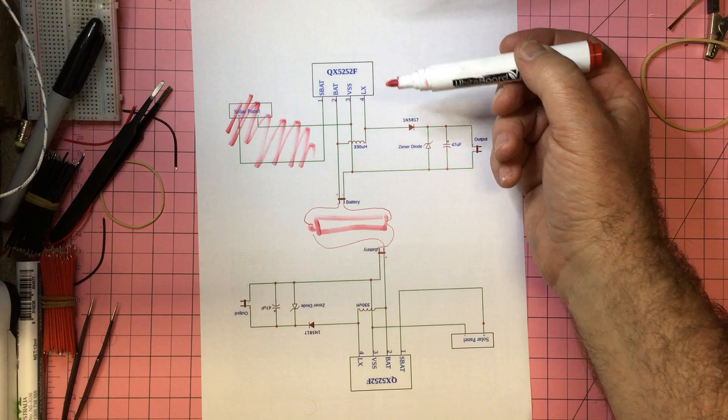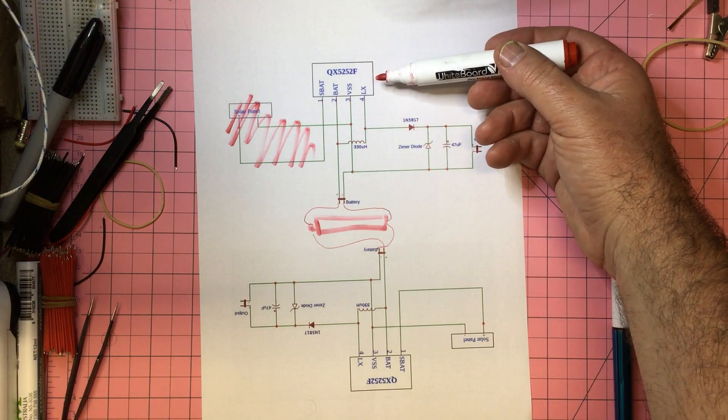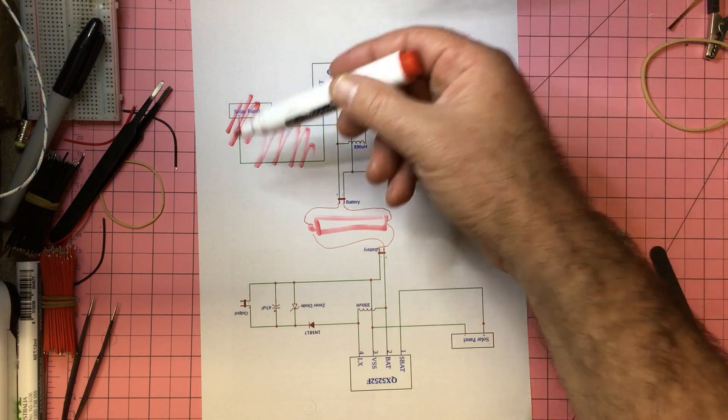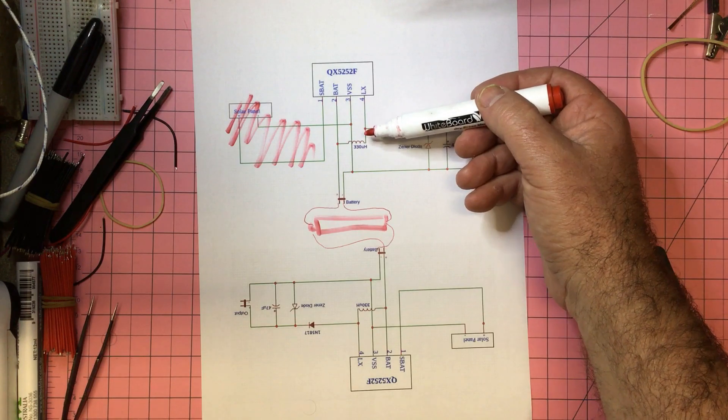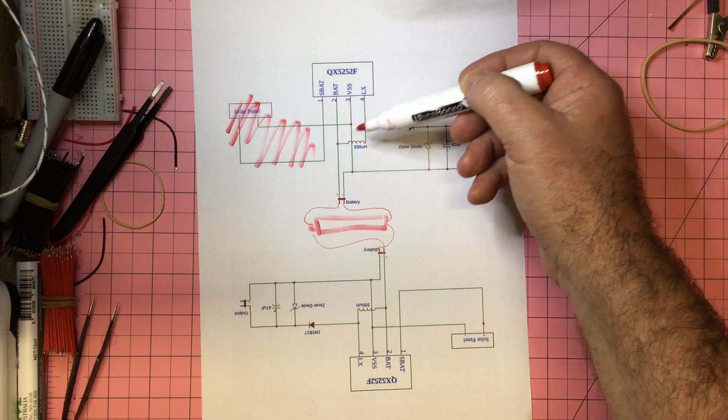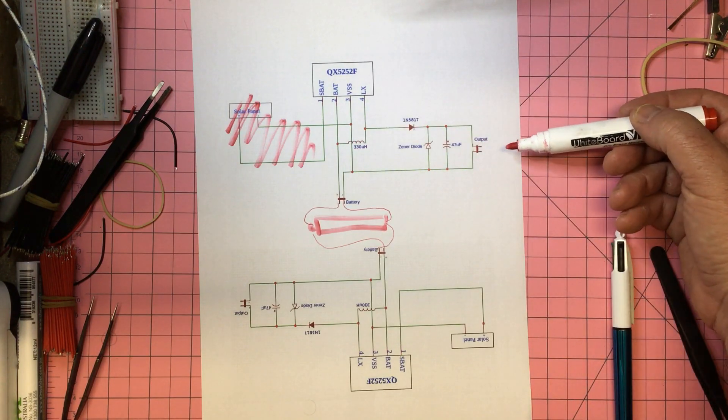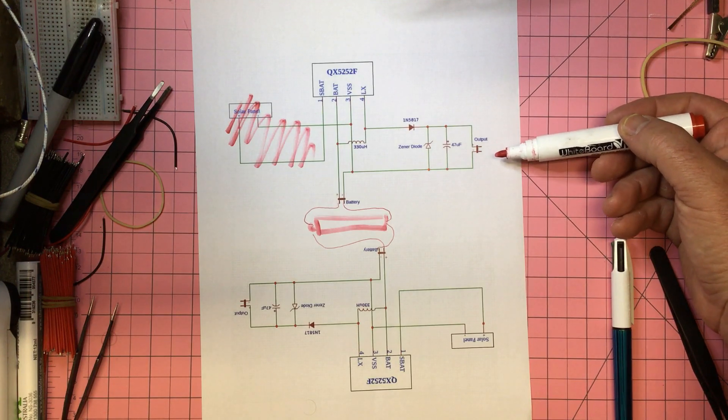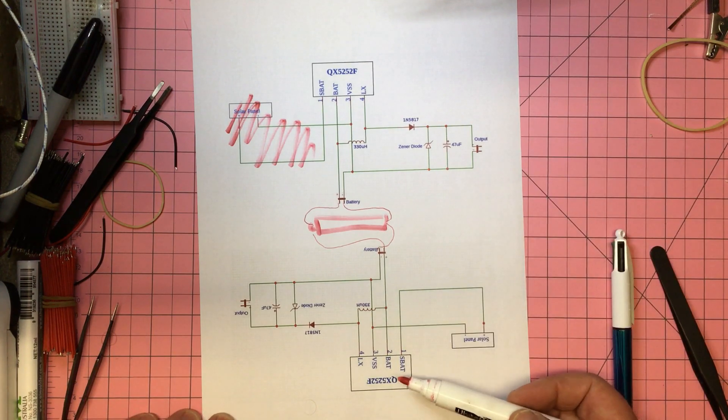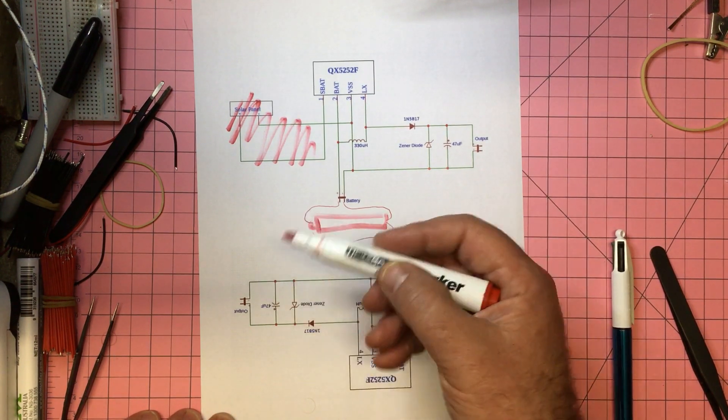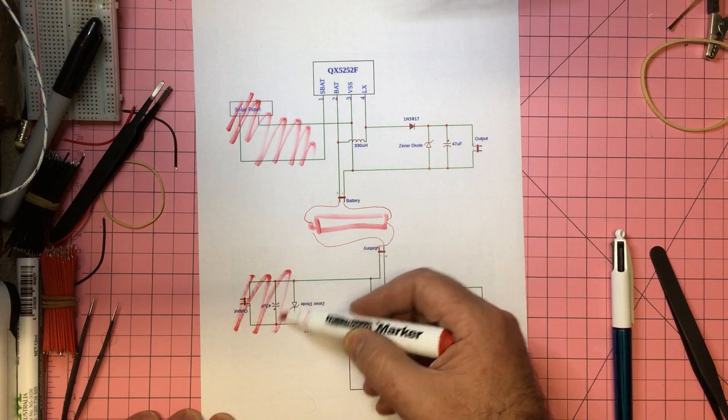That's not going to win any art prizes, but anyway. We've got the one QX5252 which doesn't have a solar panel coming but is fed via the battery, and then via this circuit here provides your stable output of let's say five volts.